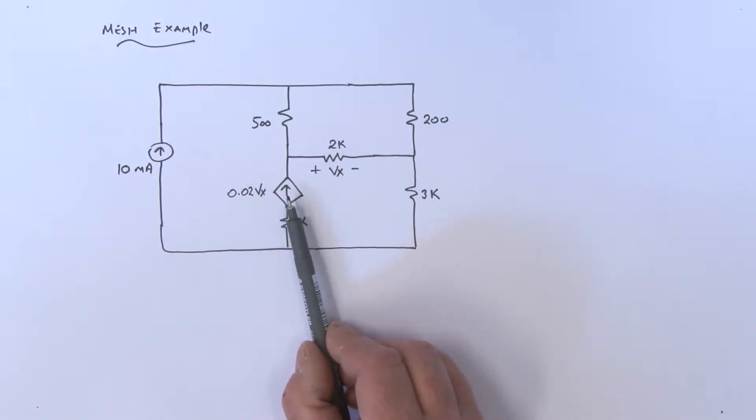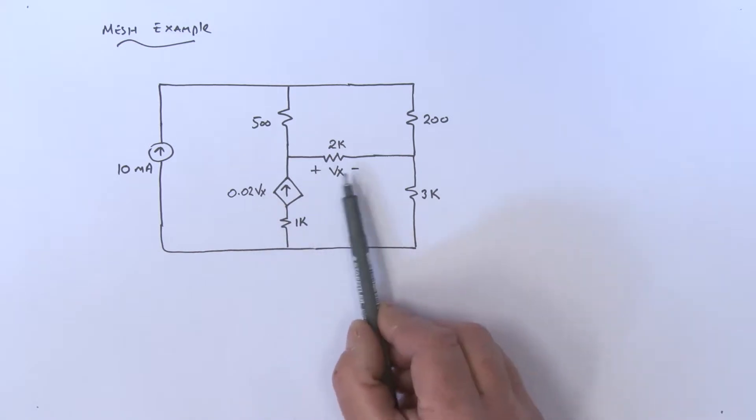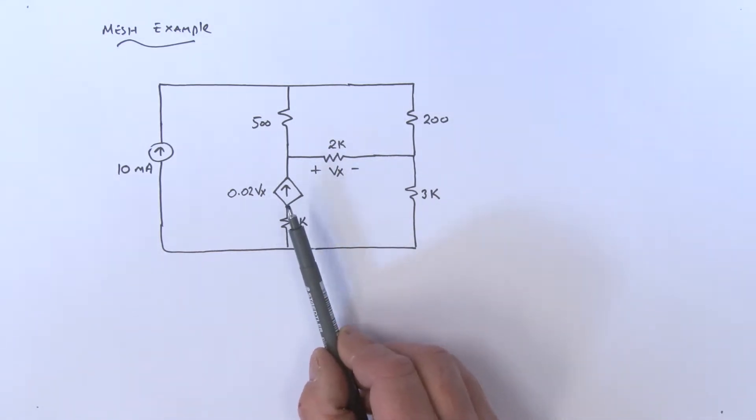Really, the value of this current is going to be 0.02 times whatever Vx is. Where is Vx? Well, Vx is defined here, plus minus. It's the voltage across that 2k resistor. So this is a dependent current source, a voltage dependent current source.